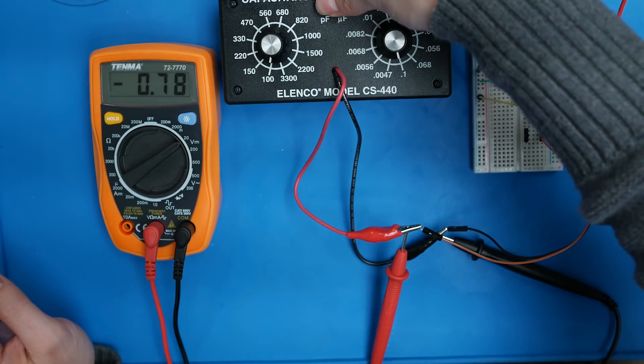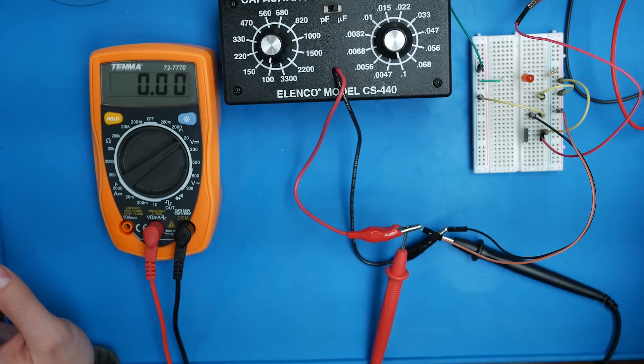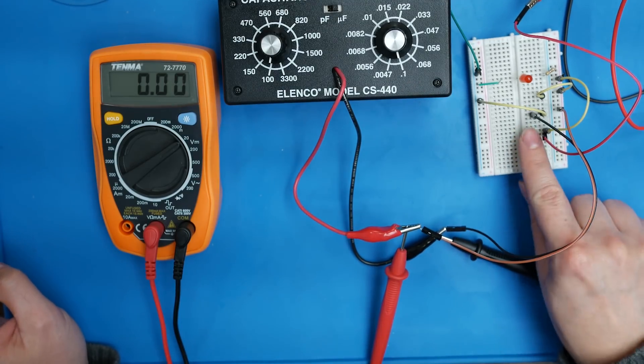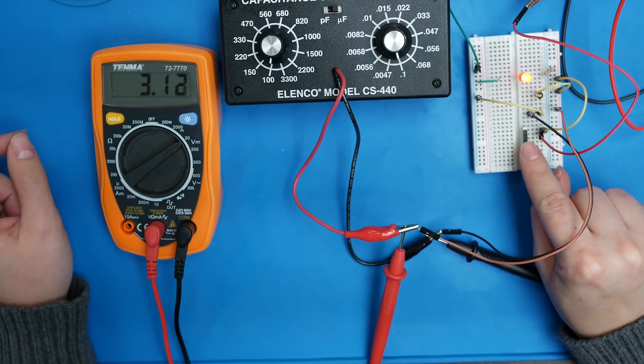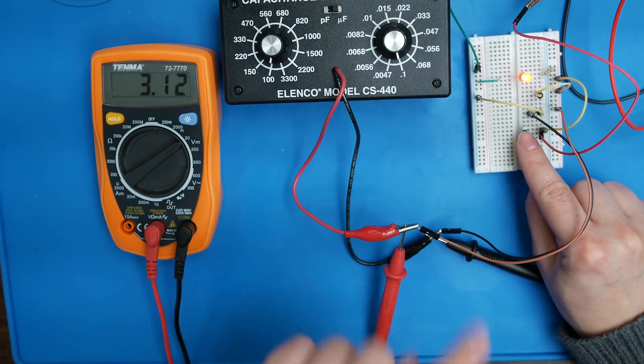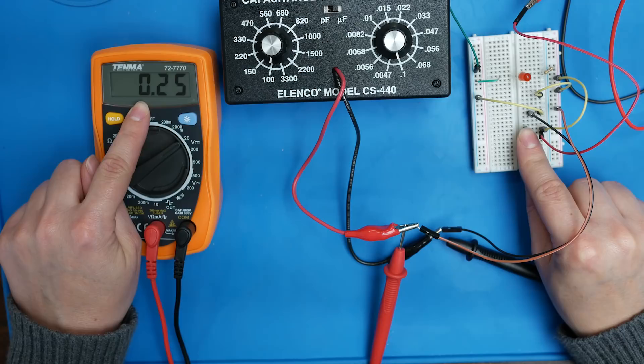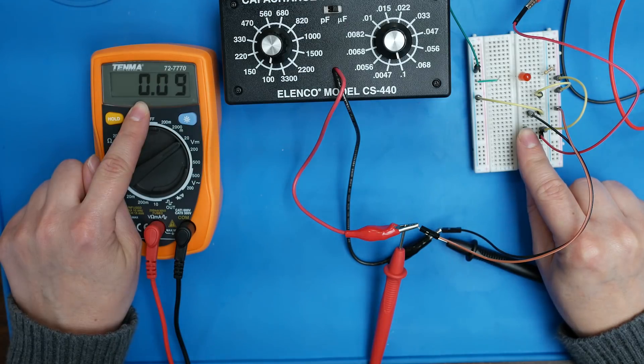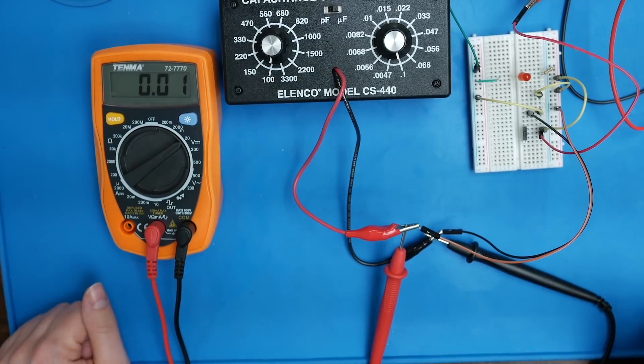I'm going to switch to microfarads. So now I'm at my highest capacitance value. Let's apply power to the circuit. Okay. Didn't take very long to charge up. If I turn the circuit off, let's see how fast that 0.1 microfarad capacitor discharges. Much slower. So that's the difference.